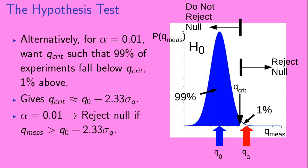Alternatively, if we had chosen alpha equals 0.01, we would want Q critical such that 99% of experiments fall below Q critical and 1% fall above. This holds for Q critical approximately equal to Q0 plus 2.33 sigma Q. So with alpha equals 0.01, you would reject the null hypothesis if Q measured is greater than Q0 plus 2.33 sigma Q.